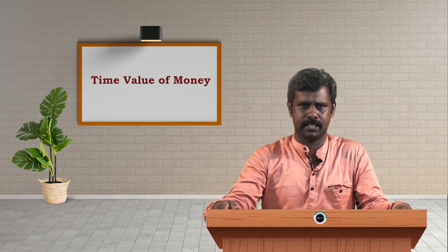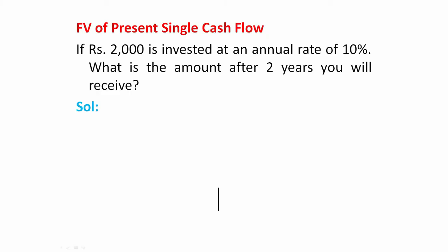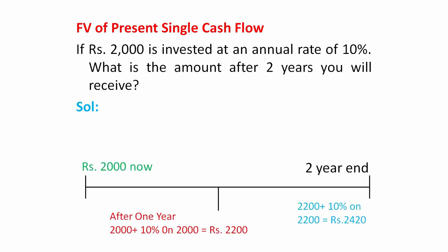Let me go through some examples to get more clarity about these concepts. Future value of the present single cash flow: if 2000 rupees is invested at an annual rate of return of 10 percent, what is the amount after two years? In the first year, starting with 2000 rupees, 10 percent on 2000 is 200 rupees, giving 2200 rupees at the end of the first year. That 2200 rupees is reinvested at the same 10 percent, so at the end of the second year we end up with 2420 rupees.